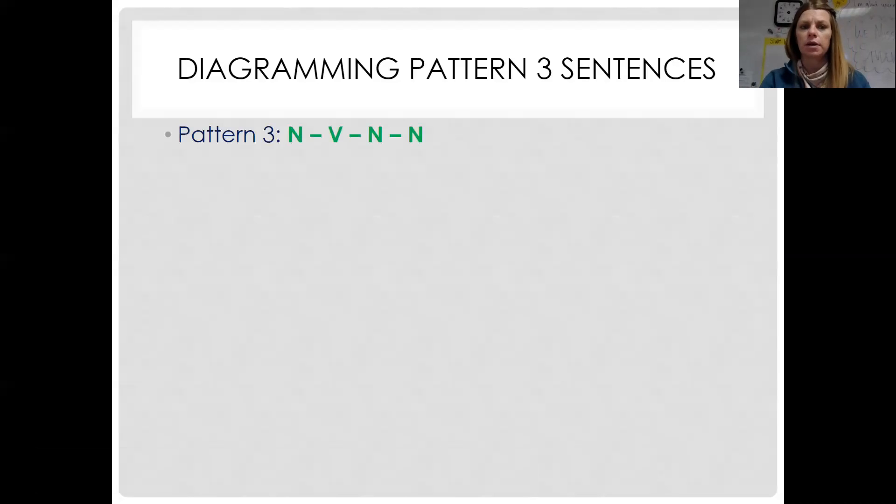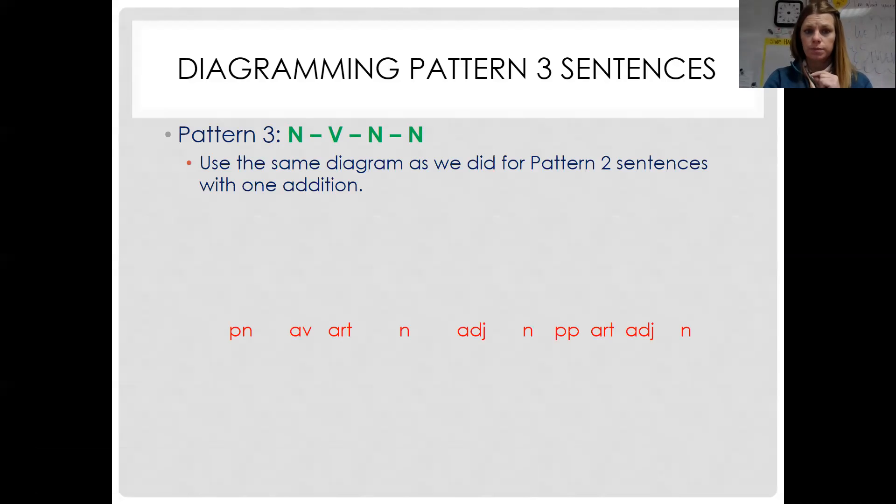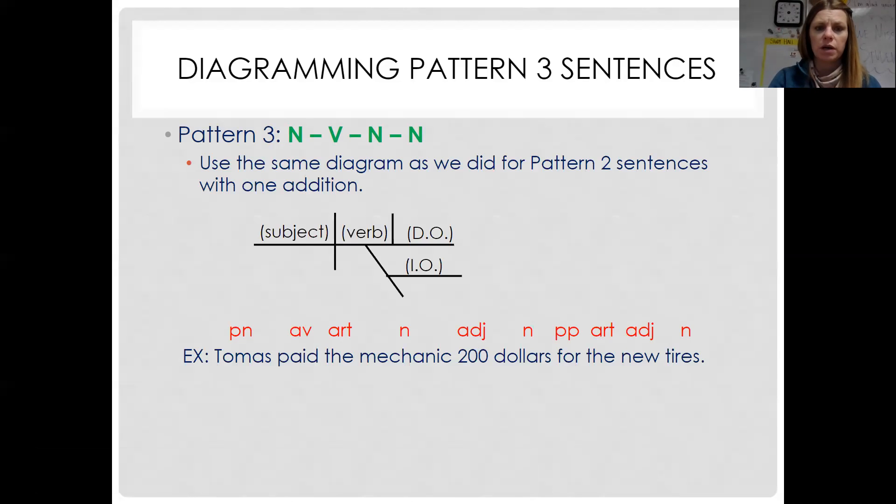Diagramming pattern three sentences is same thing, patterns, a noun, verb, noun, noun. We use the exact same diagram as we did for pattern two sentences. We just add one new thing. So here's our example. Thomas paid the mechanic $200 for the new tires. Subject, verb, direct object, and this is our new thing. We have this indirect object. It looks kind of like a prepositional phrase except for this tail. This tail is important for you to see that that is not a prepositional phrase because nothing's going to go on this line right here. You're only just kind of giving yourself another baseline, just giving yourself more space.